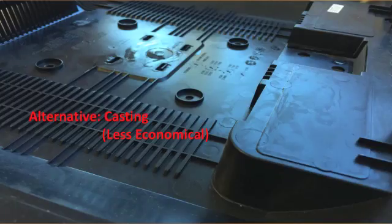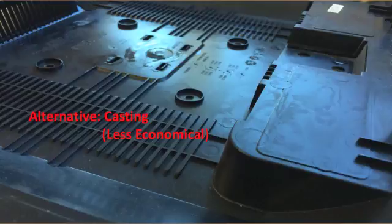An alternative process is casting, but due to the complex geometry including ribs and protrusions, and also the high production rate of the product, it would be uneconomical to make these parts by casting.